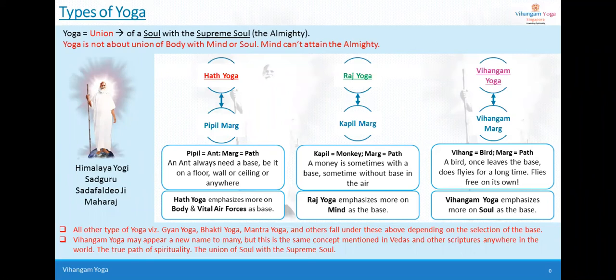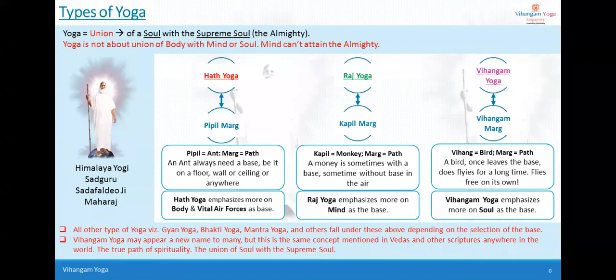There is no other element — body, mind, intellect, or ego — that needs to be united with the supreme soul. The synchronization of mind, body, and soul is also not called yoga. Yoga means union of the soul with the supreme soul, and that's it. This is the purest definition of yoga, as described by Sadhu Sadhafaldev Ji Maharaj.